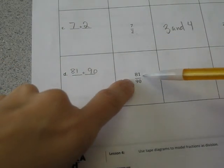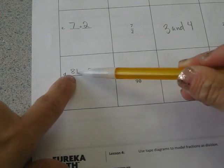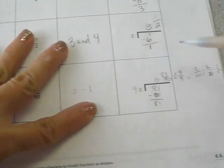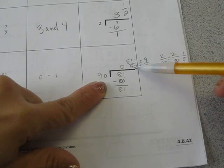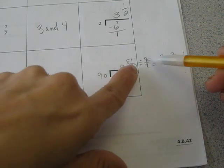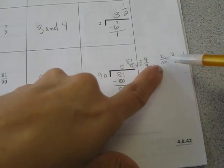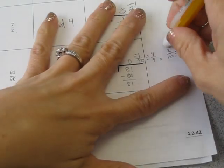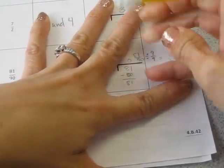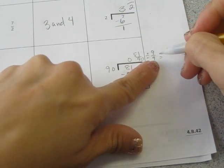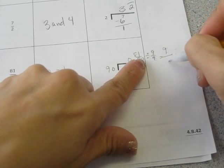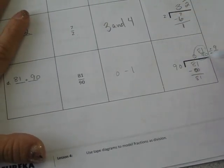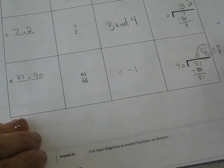And the last one, which is 81 90ths, so that's 81 divided by 90, and I did my division here. It gave me 0 and 81 90ths, but I can also simplify. So 81 divided by 9 is, oh, I did that wrong. I'm so glad I caught it. 81 divided by 9 is 9 tenths. There we go. But if you just have 81 90ths, that's perfectly fine. Okay.